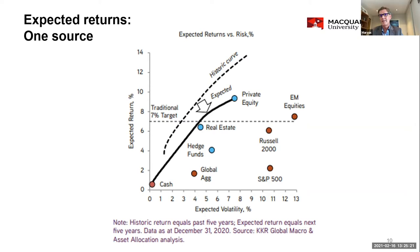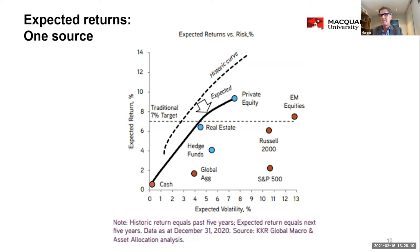This is a chart from KKR's economics unit run by Henry McVeigh — they're the only group I know that has both past and forward returns by asset class. The dotted line is the historical efficient frontier, and the solid line is expected returns — they are expecting collective returns to come down. If you look at private equity, it is potentially the most attractive on a risk-return basis, with expected returns of around 10% and middle-of-the-market volatility. Expected returns for public markets going forward are quite low compared to where they have been historically. Private equity in the past has been an outperformer, and infrastructure, real estate, and other private asset classes have also done really well.